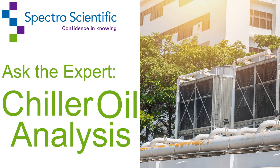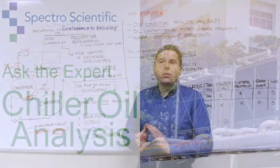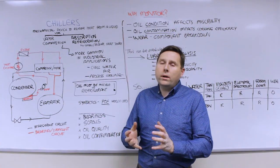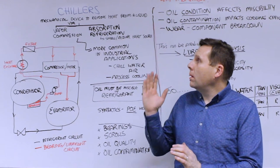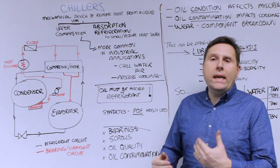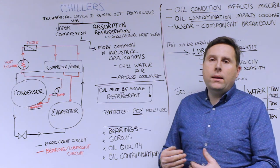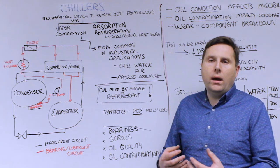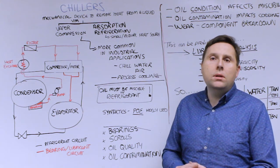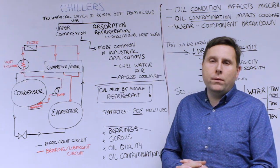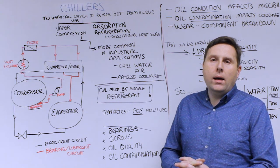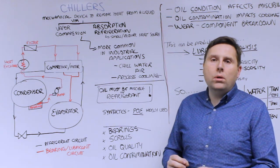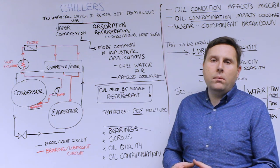Let's review oil analysis for chiller systems. Chiller systems are mechanical devices that remove heat from liquid via a couple of different system styles: vapor compression cycle or absorption refrigeration cycle. In both cases, the goal is to remove heat from the fluid so you can initiate cooling.